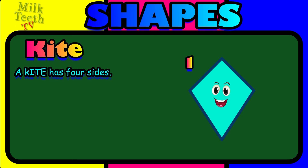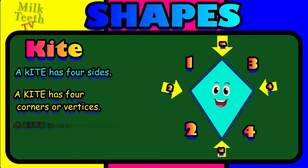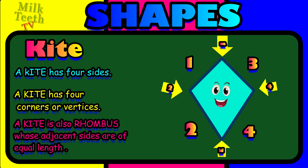One, two, three and four. A kite has four corners or vertices: one, two, three and four. A kite is also a rhombus whose adjacent sides are of equal length. Sides number one and three are of equal length, and sides number two and four are of equal length. These sides which are side by side are known as adjacent sides.